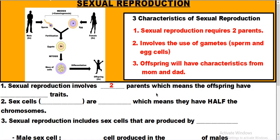Sexual reproduction involves two parents, which means the offspring has shared traits. Because you get half of dad's DNA and half of mom's DNA, you might hear a relative say things like 'you have your mom's eyes, your dad's smile, your mom's hair, your dad's nose.' The reason you have this mixture of characteristics is because you are a mixture of your parents' traits.